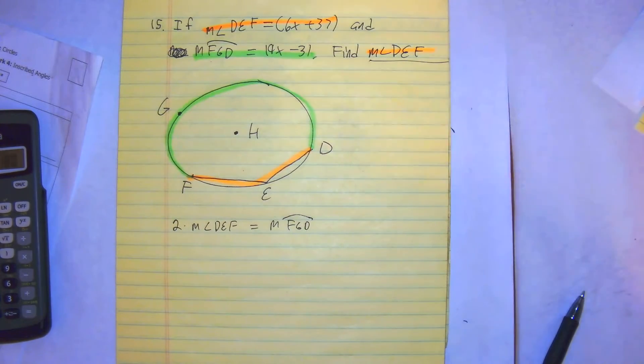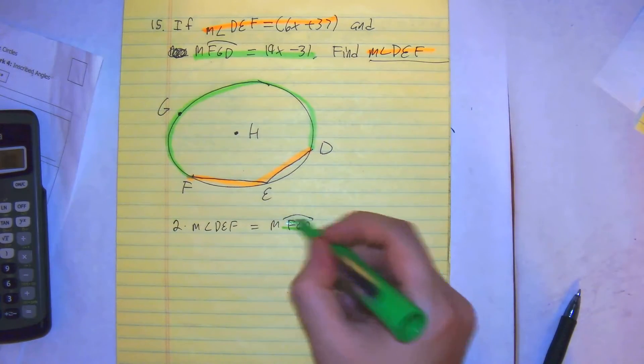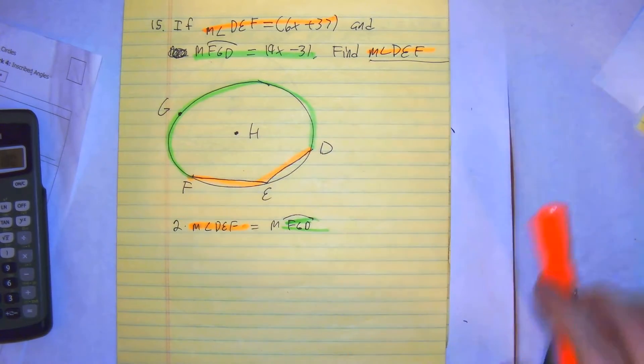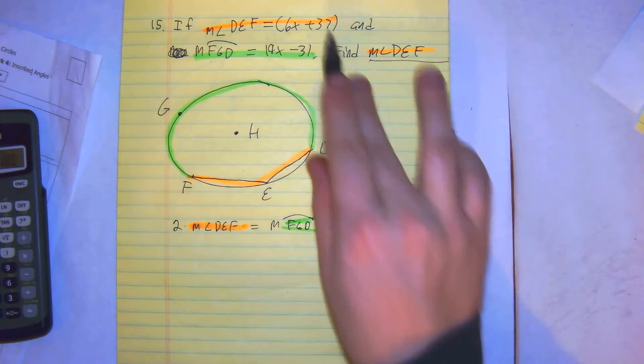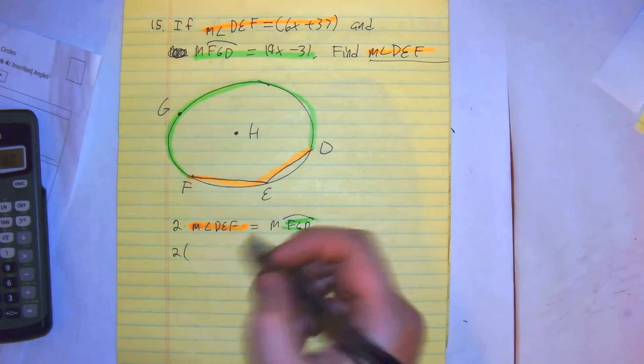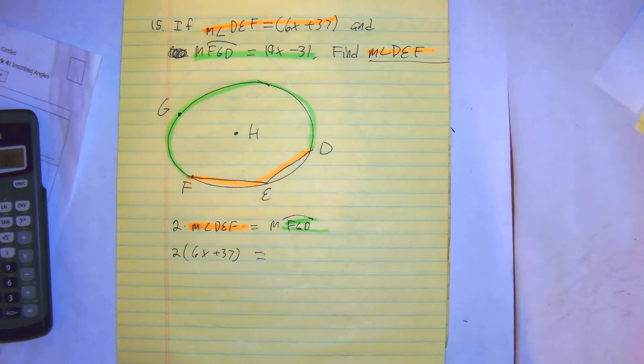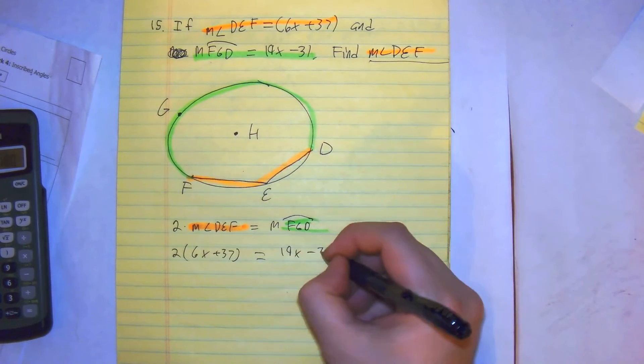All right, so this, in my opinion, is the easiest formula for it. We would just plug in what we know: 2 times the quantity of 6x plus 37 equals 19x minus 3.